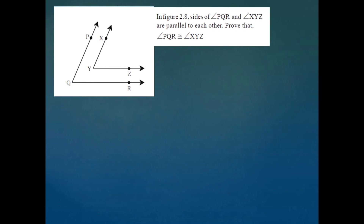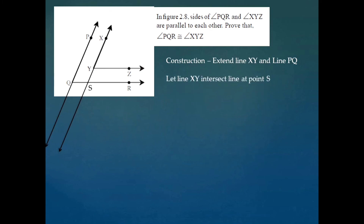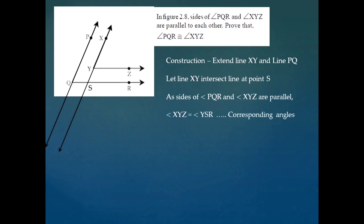To prove this, we do a construction: we extend the sides of angles PQR and XYZ — specifically extending XY and PQ — and let line XY intersect line QR at point S. Since sides of angle PQR and angle XYZ are parallel, line YZ is parallel to line QR. Taking XS as their transversal, angle XYZ is congruent with angle YSR, which are corresponding angles. We call this equation number 1.